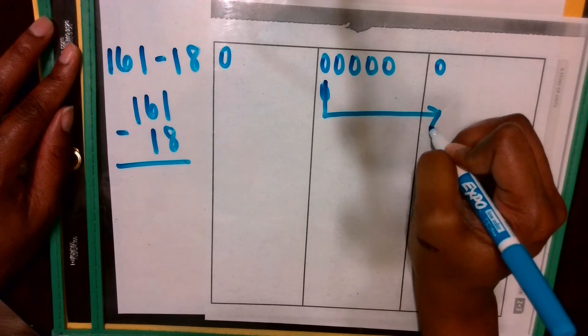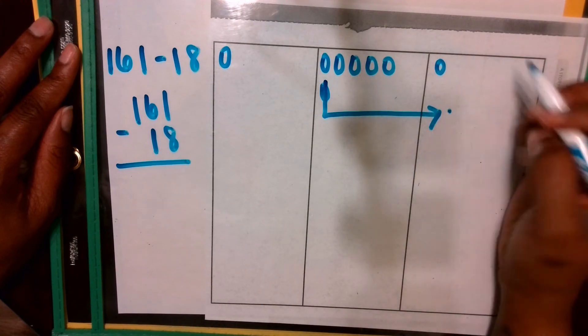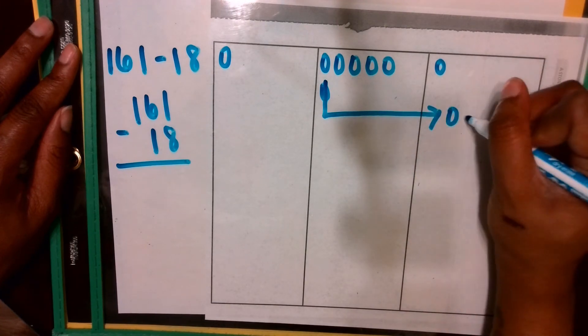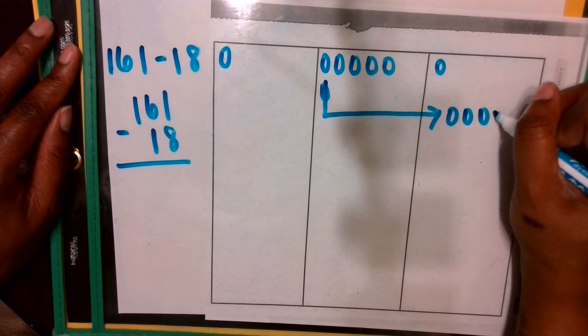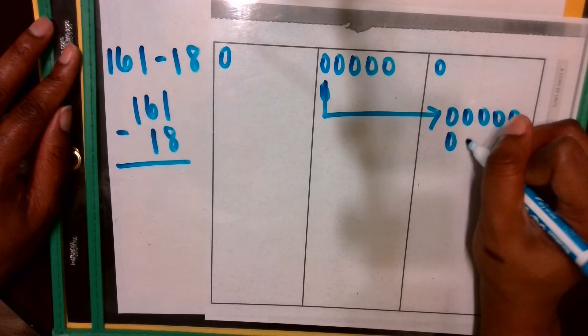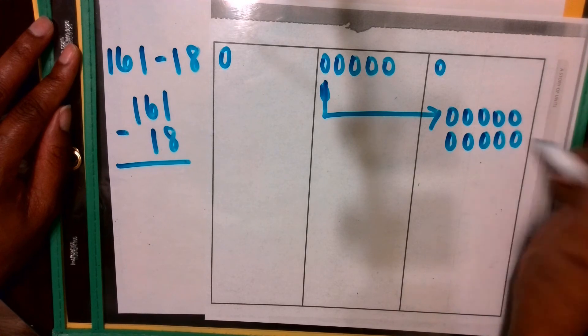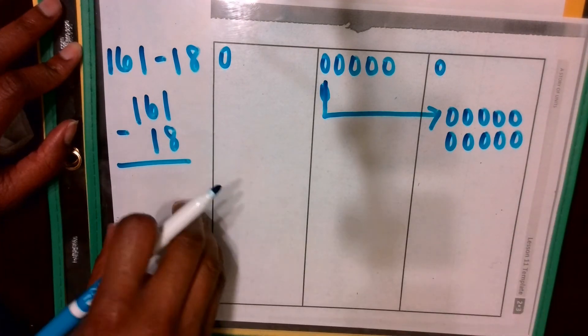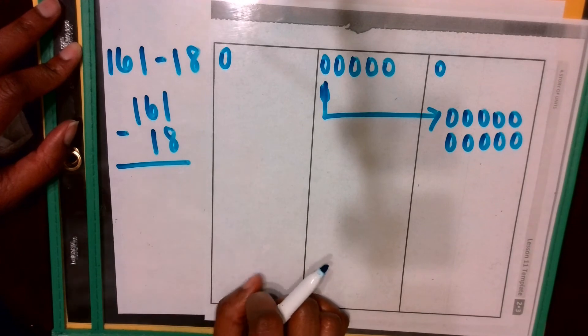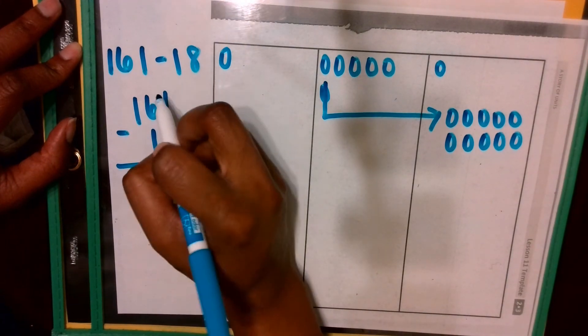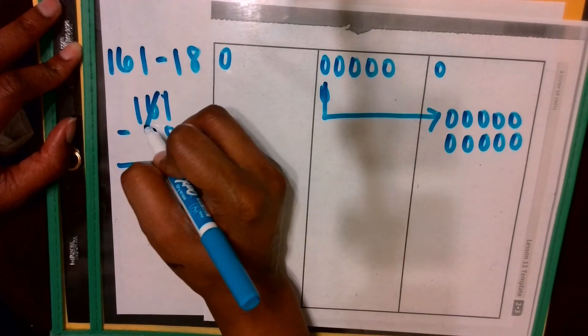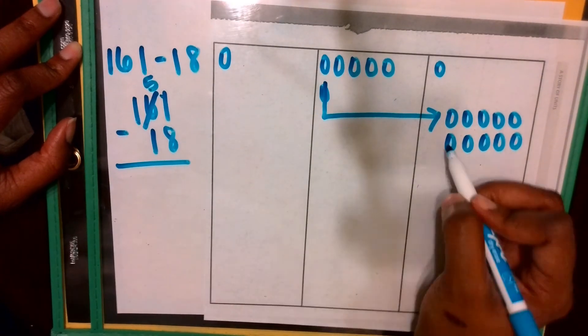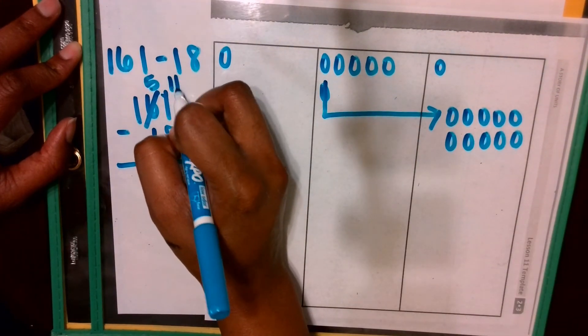Because 10 ones make, or 1 ten equals 10 ones. 6, 7, 8, 9, 10. And whatever I do in my chart, I must also show in my vertical form. I now have 5 tens and 11 ones.